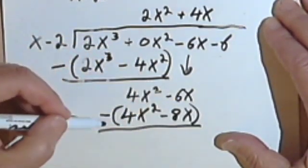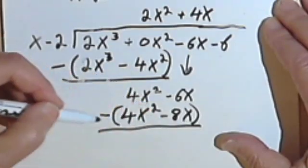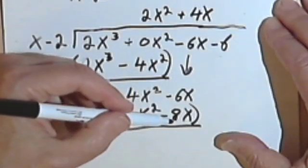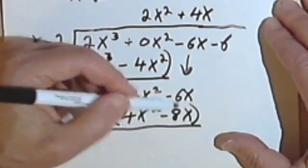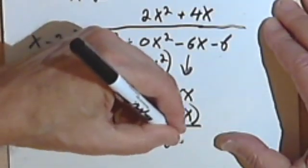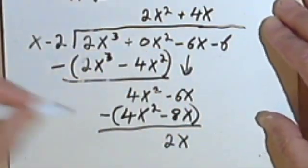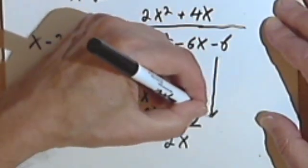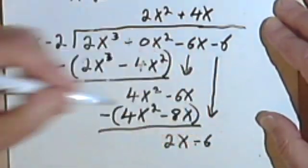The 4x squared and the negative 4x squared cancel. Negative 6x minus negative 8. Minus negative 8 is the same as plus 8. So negative 6 plus 8 is a positive 2. So I've got 2x. Bring down my next term, minus 6.